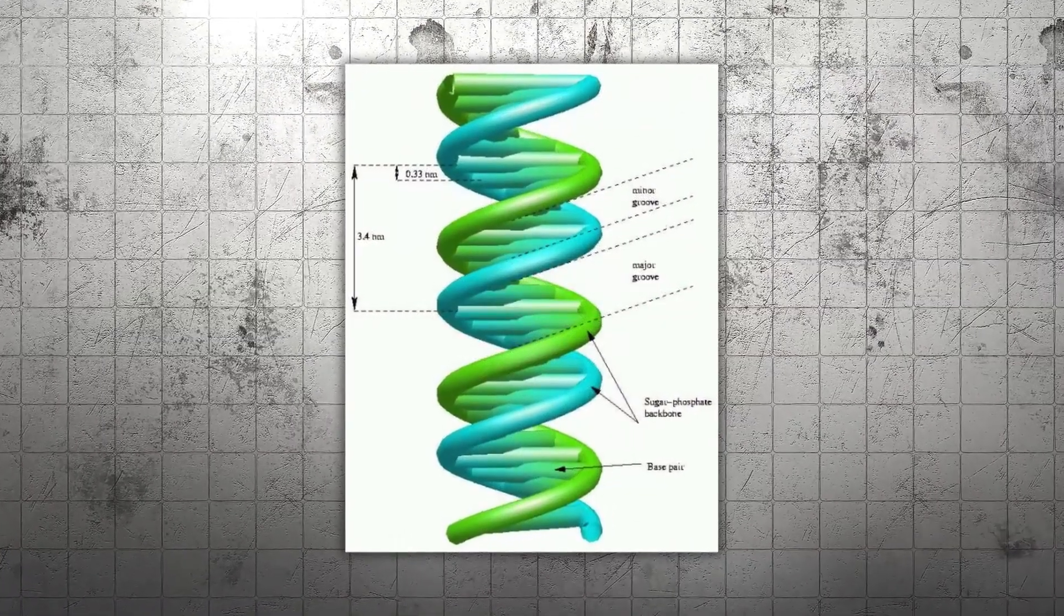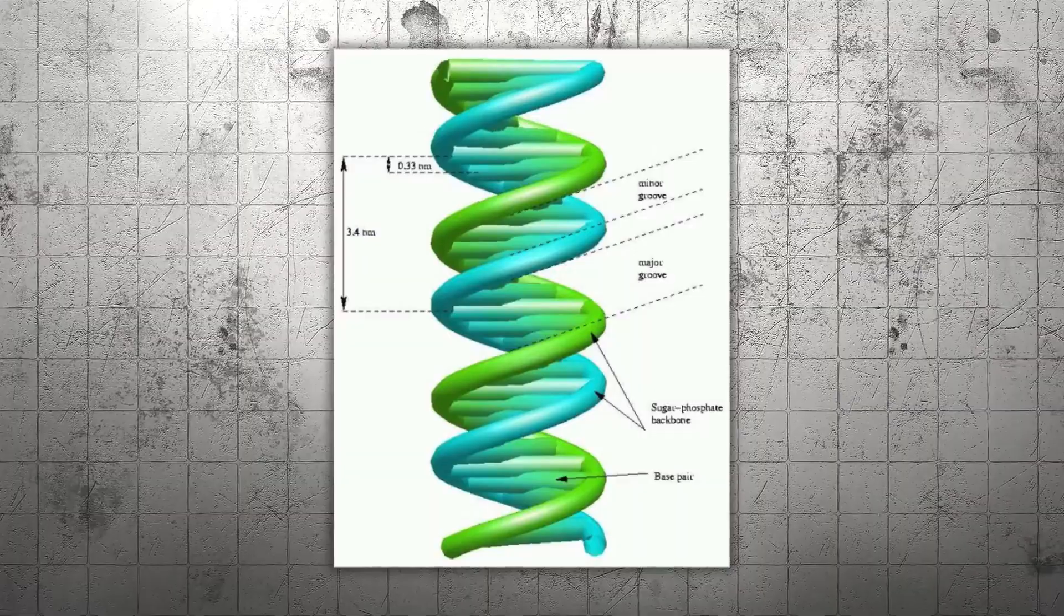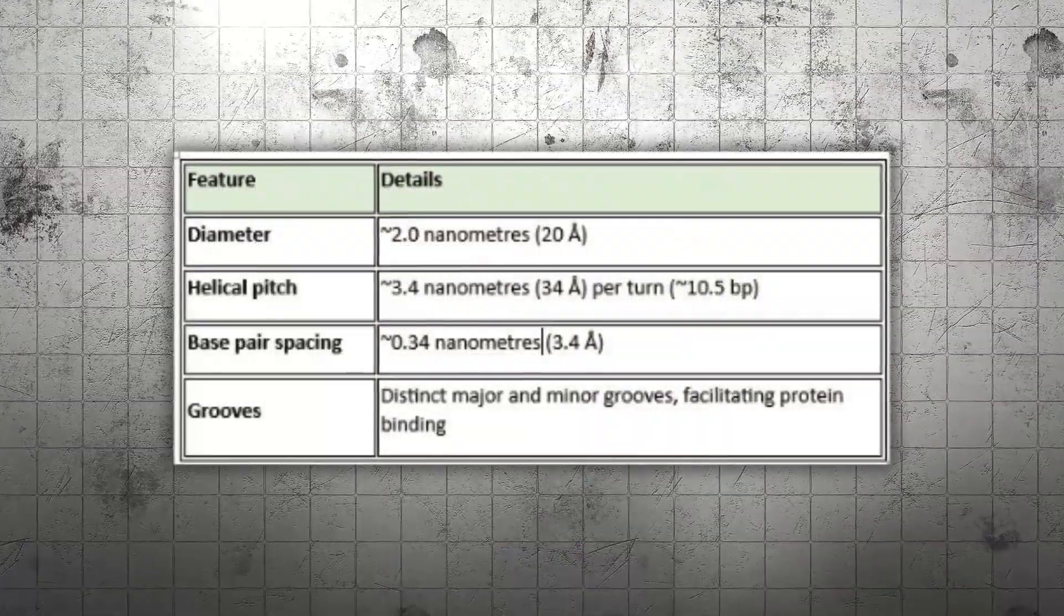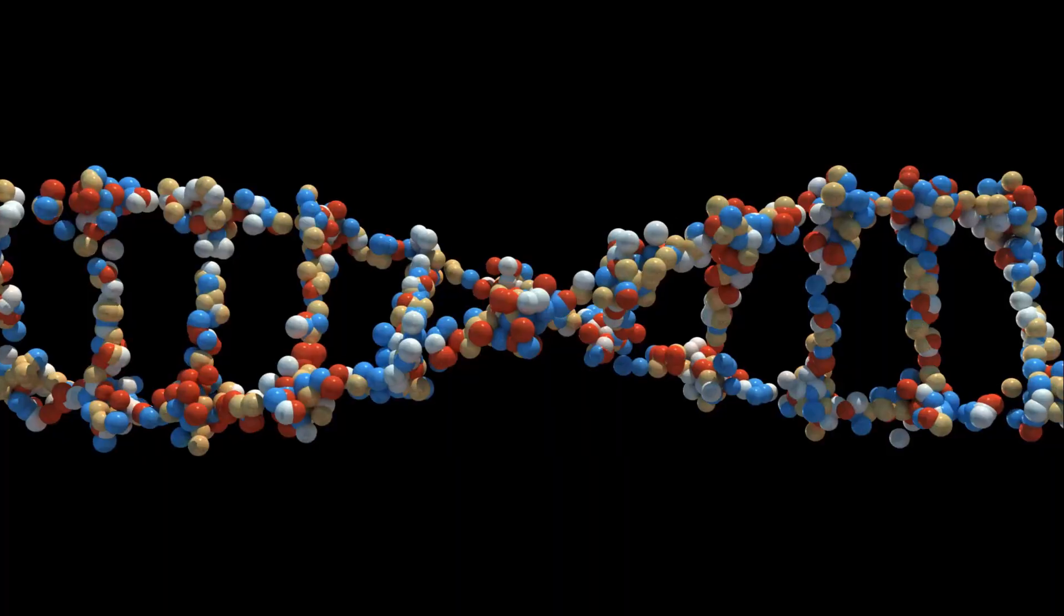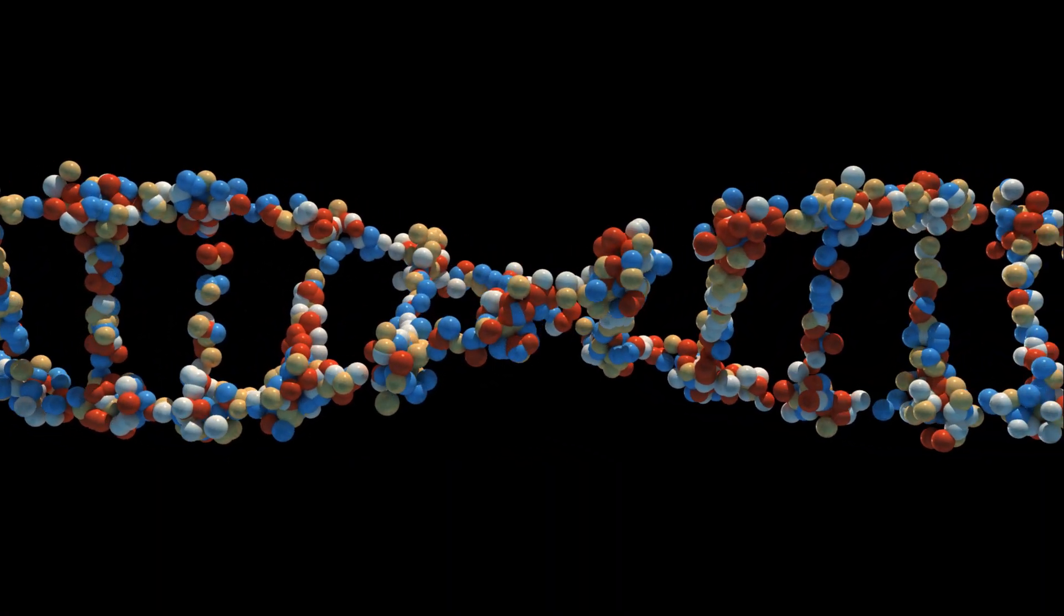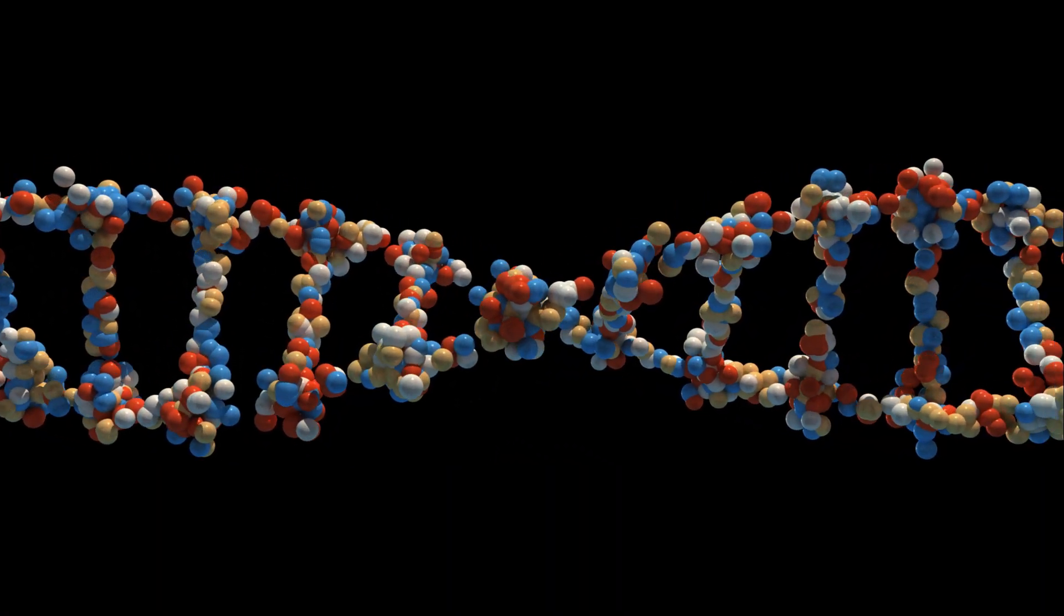The most common form of DNA is called B-DNA. It is a right-handed helix perfectly balanced with repeating dimensions like clockwork. Each base pair stacks neatly, creating the stable code of life. This design is so precise it allows DNA to store information without breaking down.